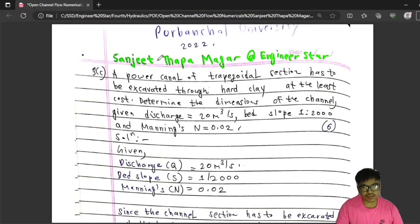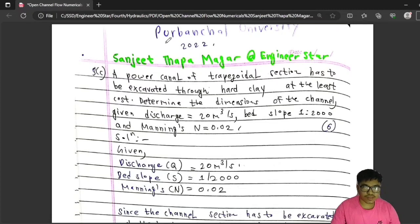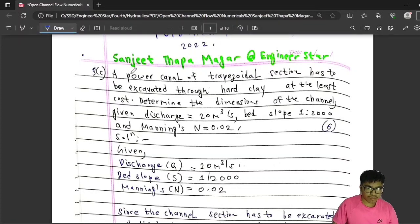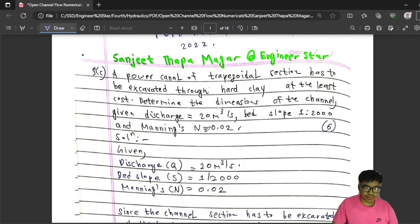Hello everyone, welcome to my channel Engineering Star. Today I will solve numericals of open channel flow uniform flow that was asked in Purwanchal University. The first question was asked in 2020: a power canal of trapezoidal section has to be excavated through hard clay at least cost. Determine the dimensions of the channel given discharge is 20 m³/s, slope 1:2000, and Manning's n is 0.02. This was asked for 6 marks.